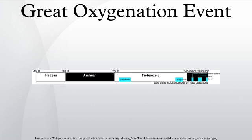The Great Oxygenation Event triggered an explosive growth in the diversity of minerals on Earth. It is estimated that this event alone was directly responsible for more than 2,500 new minerals out of the total of about 4,500 minerals found on Earth. Most of these new minerals were hydrated, oxidized forms of minerals formed due to dynamic mantle and crust processes after the Great Oxygenation Event.